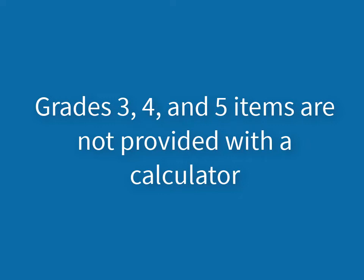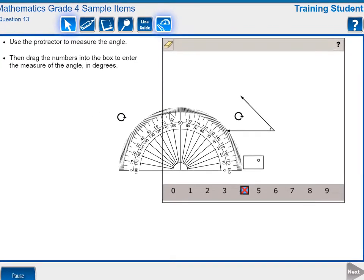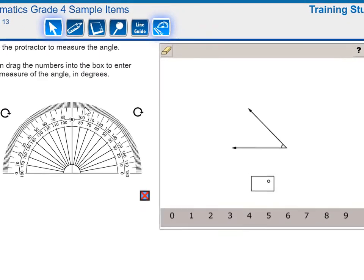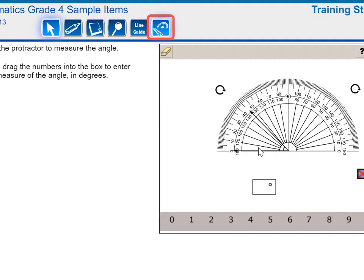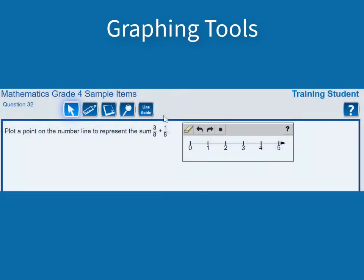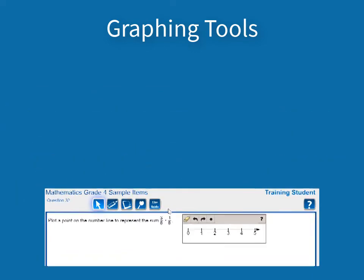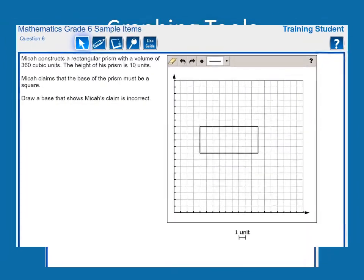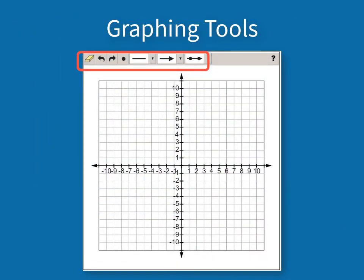Another tool students may encounter in the mathematics CAT is a protractor. This digital tool is used to measure angles. For items that require a protractor, students will see this icon. Students may also encounter two types of graphing tools: a number line in grades 3 through 7, or a coordinate grid in grades 5 through 7. All of the buttons needed to answer the question will be provided with the graphing tools.